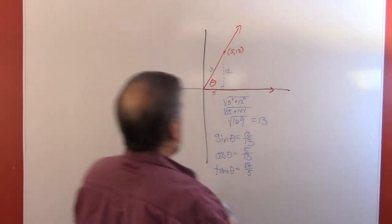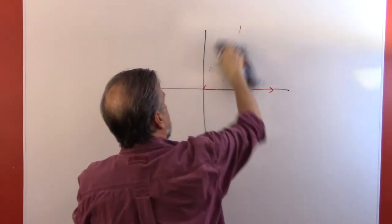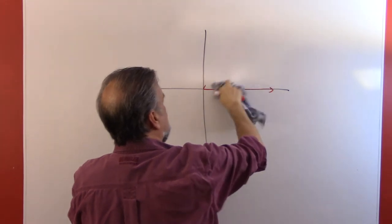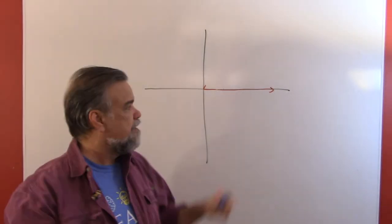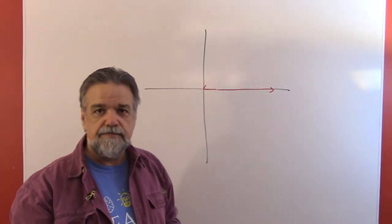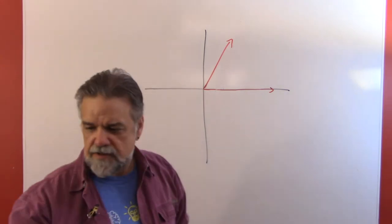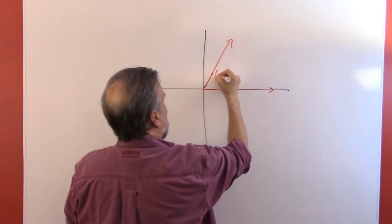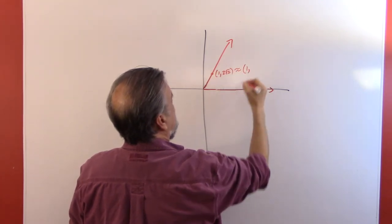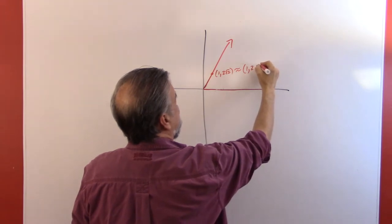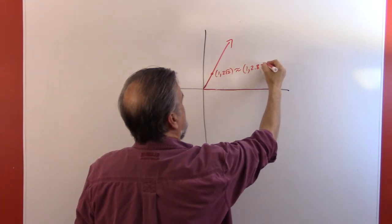Let's look at another example. I'll keep one side going along the positive x-axis — this is called the standard position of an angle, where the initial side goes out like that and the terminal side goes out through a point. This time the terminal side goes through the point (1, 2√2), which is approximately (1, 2.83).